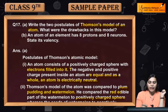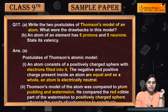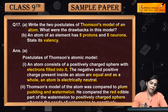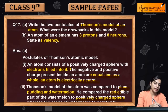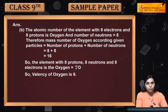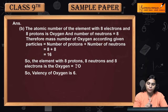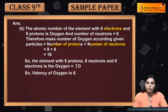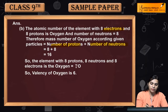Next part: an atom of an element has 8 protons and 8 neutrons — state its valency. We need to identify which atom this is. The atomic number equals the number of protons, which is 8. The mass number equals the number of protons plus the number of neutrons, so 8 plus 8 equals 16.